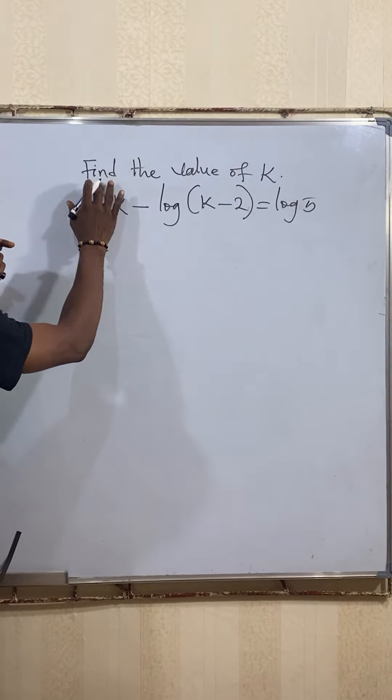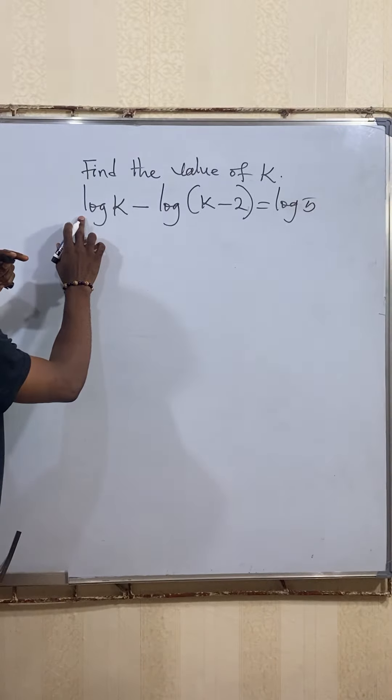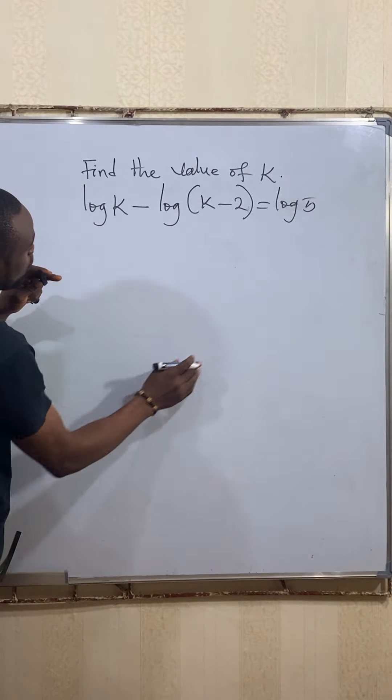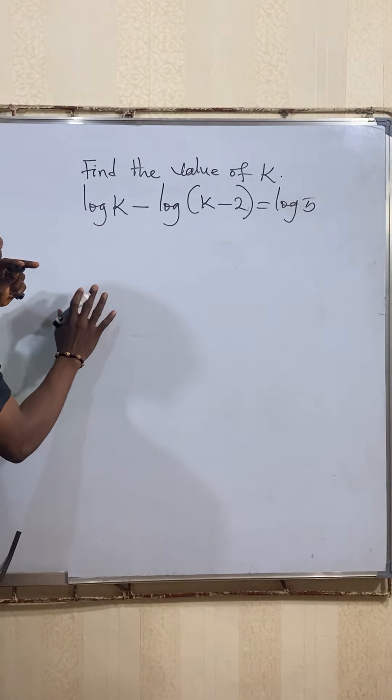This particular question says find the value of k. Here we have log k minus log open bracket k minus 2 equal to log 5. So basically what we'll do here is apply the subtraction law of log.